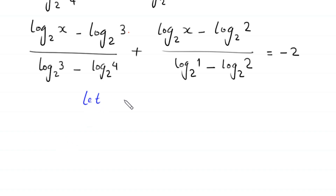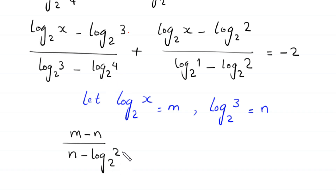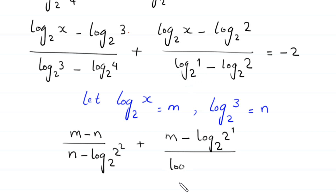We suppose that log base 2 of x is equal to m, and log base 2 of x minus log base 2 of 3 is equal to n. So this equation becomes m minus n divided by log base 2 of 3/4, plus m minus log base 2 of 2 divided by log base 2 of 1/2, equal to negative 2. Note log base 2 of 4 = log base 2 of 2 squared.